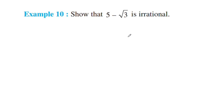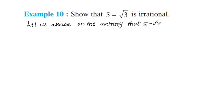We assume on the contrary that 5 minus root 3 is a rational number. We write it as a by b, using the rational number formula p by q where q is not equal to 0. So, 5 minus root 3 equals a by b.